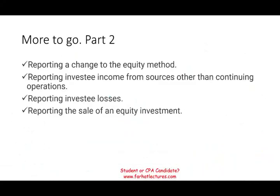In part two, I will look at changes when we switch accounting methods — from non-equity to equity or from equity to consolidation. We'll look at reporting the investee's income from sources other than continuing operations, reporting investee losses (where we reduce our investment), and reporting the sale of an equity investment where we could sell the whole thing and bring it down to zero.